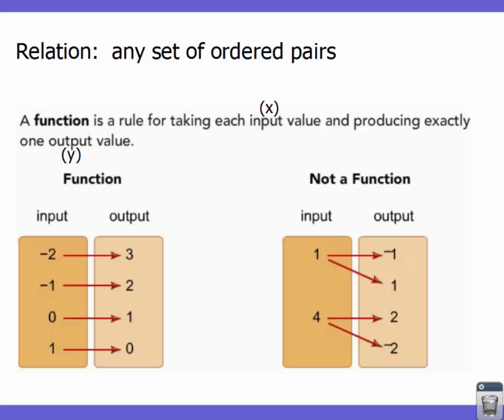A relation is any set of ordered pairs. Now with that relation we can determine: is the relation a function? A function is a rule for taking each input — our x values — and producing exactly one output, or one y value. In these two t-chart examples, we have an input (x value) and an output (y value). In the first, each input has exactly one output, but in the second, one input can produce two different outputs.